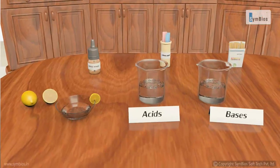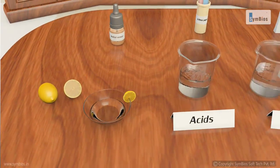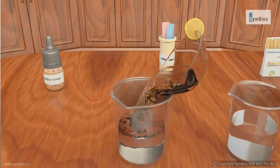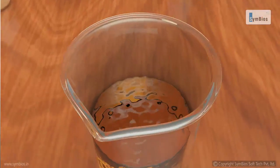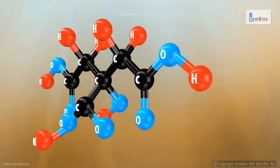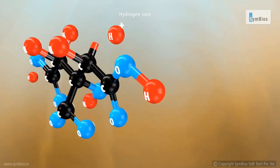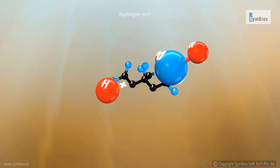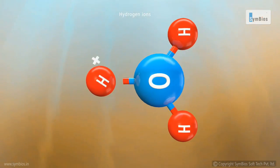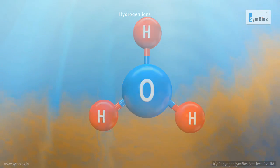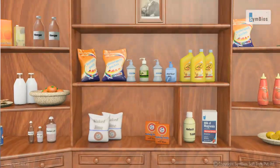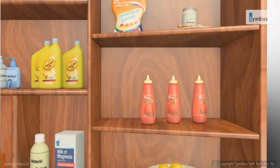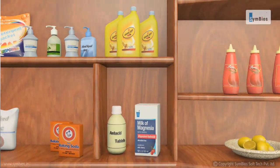Lemons taste sour due to an acid called citric acid, which dissociates in water to give hydrogen ions. Hydrogen ions cannot exist alone in water — they combine with a water molecule to form hydronium ions. Arrhenius defined acids as substances that yield hydrogen ions when dissolved in water. Acids have a sour taste.